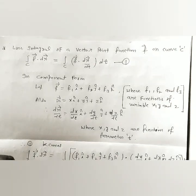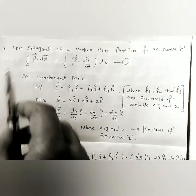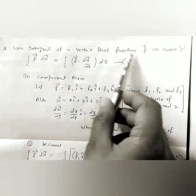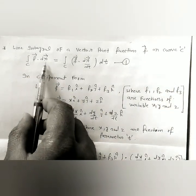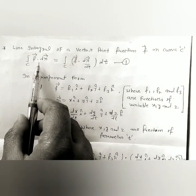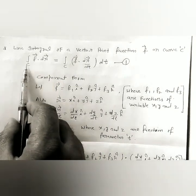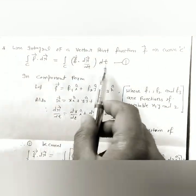Dear students, in this lecture we continue the topic of line integral of a vector point function f on curve c. We have already discussed in the last lecture that the line integral of a vector point function f on curve c is given by the integral of f dot dr, which can be written as f dot dr by dt, dt.